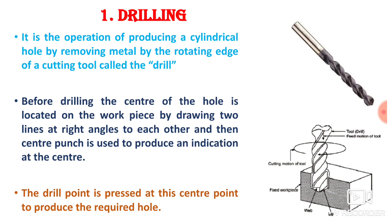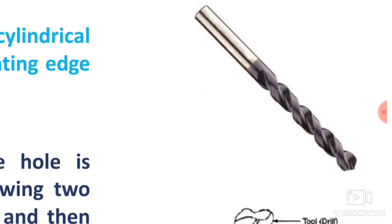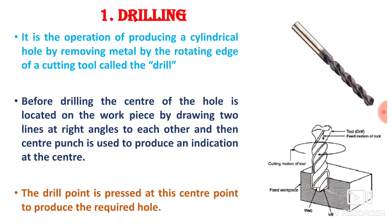The very first operation is drilling. It is an operation of producing a cylindrical hole by removing metal by the rotating edge of a cutting tool called a drill. The hole can be machined with the help of a cutting tool known as a drill bit, which has flutes over its periphery and a cutting edge at the bottom. Before drilling, the center of the hole is located on the workpiece by drawing two lines at right angle to each other.